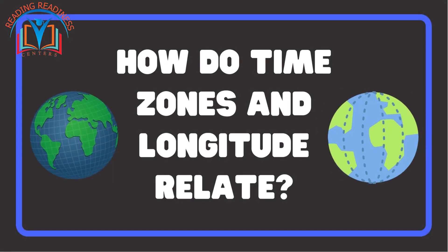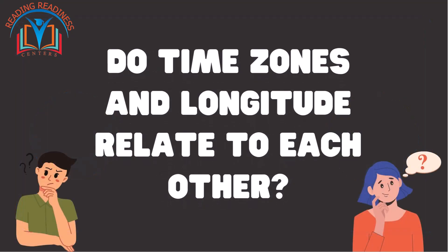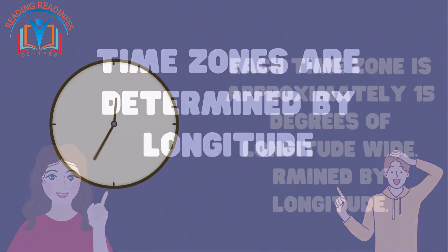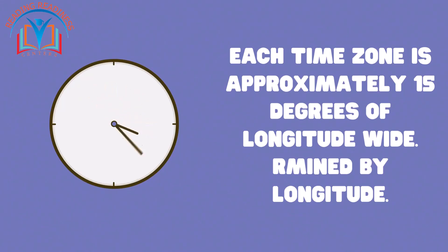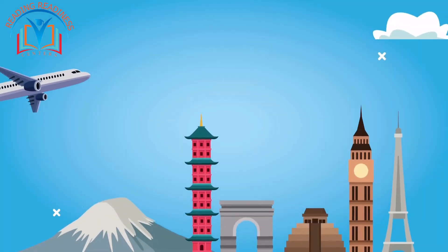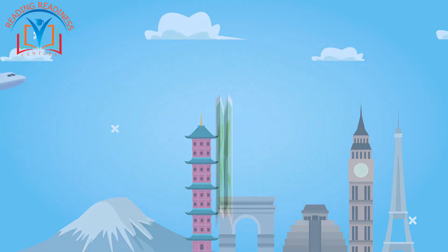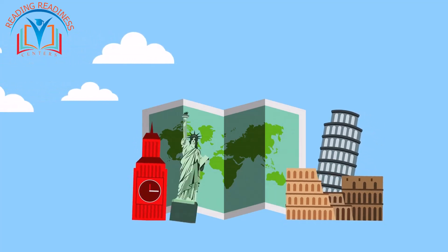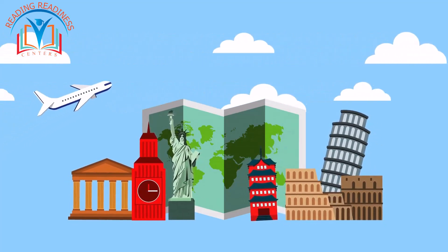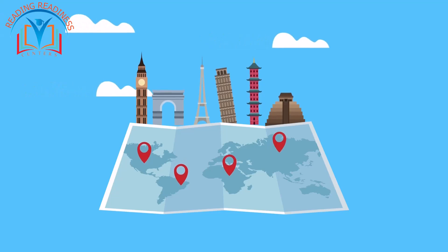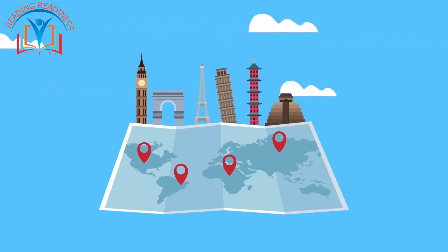Now you might be wondering: how do time zones and longitude relate to each other? The answer is quite simple — time zones are determined by longitude. Each time zone is approximately 15 degrees of longitude wide. This means that as you move east or west, you're essentially moving into a different time zone. For example, if you're in New York, around 74 degrees west longitude, you're in the Eastern time zone. If you move west to Los Angeles, around 118 degrees west longitude, you're in the Pacific time zone.